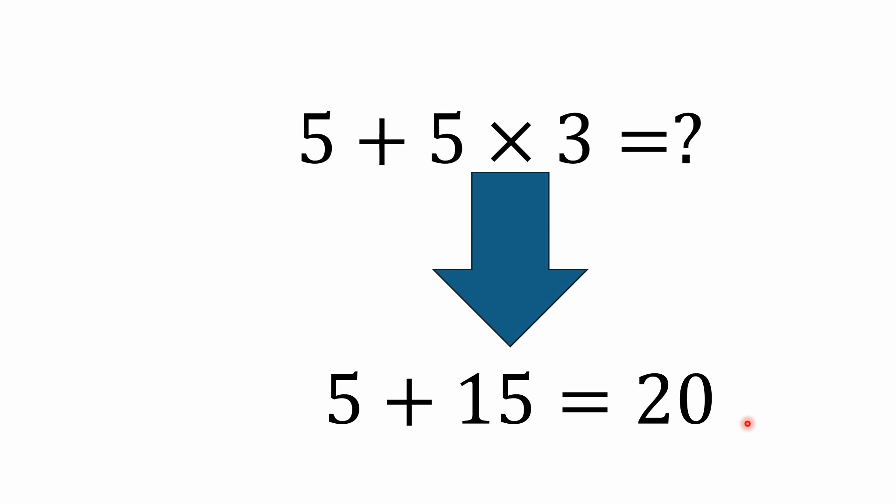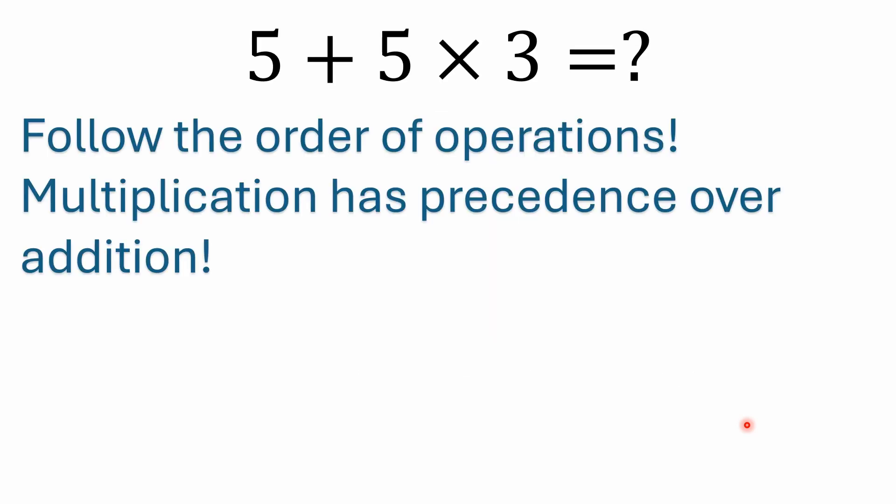All right, if you remember your order of operations, going back to elementary school or primary school, this is kind of math that's usually taught to 10 year olds basically. Multiplication has precedence over addition, so the multiplication would be handled first. Five times three is 15, five plus 15 is 20. So pretty simple, just follow the order of operations. Again, multiplication's got precedence over addition.